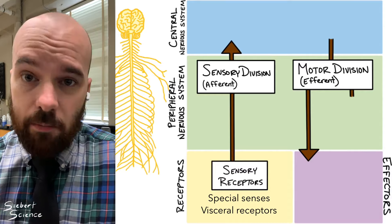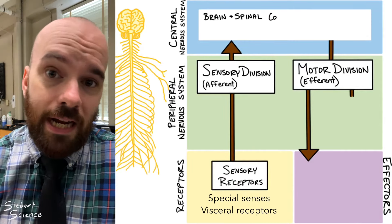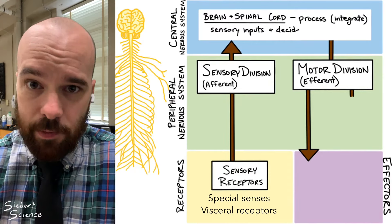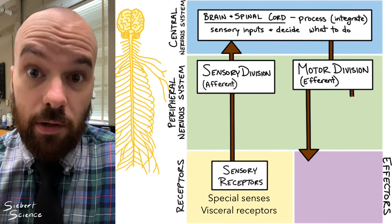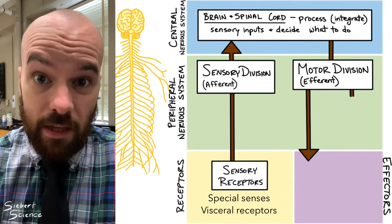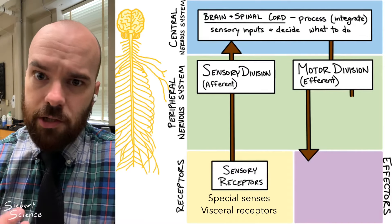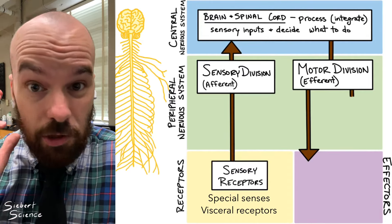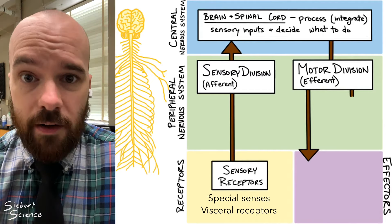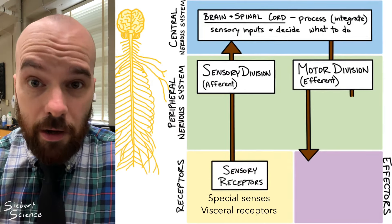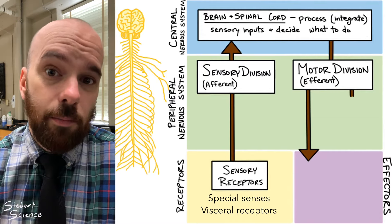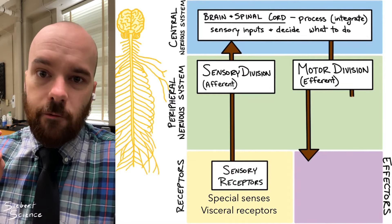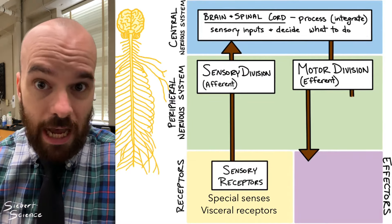Connecting the two divisions of sensory and motor is the central nervous system, which includes your brain and your spinal cord. The brain and the spinal cord are the main organs for taking information and previous experiences and making decisions about what to do next. This could be consciously controlled, like things that you think about doing, or it could be subconsciously controlled, such as a quick reaction to something, an implicit bias, or regulating your heart rate — things that you don't actively think about. So as information comes into the brain and spinal cord from the sensory division, your brain or spinal cord will process or integrate those sensory inputs and make decisions about what to do. Once a decision has been made, the brain or spinal cord will send information out through the motor division to cause a change to happen in the body.